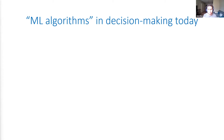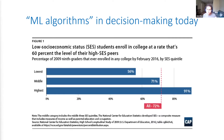For example, an exam can be seen as an algorithm. You give students some questions, and you map the inputs — the answers that students give — to a score in some systematic way. The reason I started with this example is because I wanted to go through the example of college admissions, where we know that there are persistent disparities in enrollment across race and socioeconomic status.